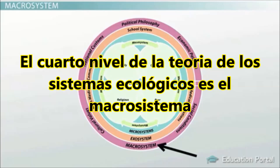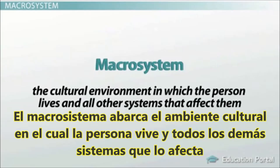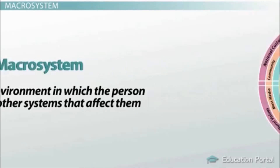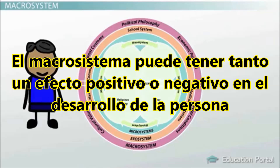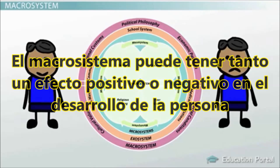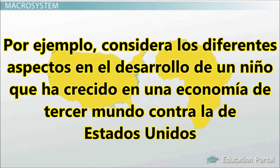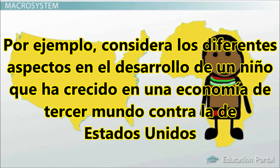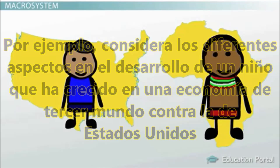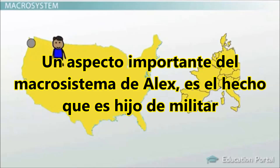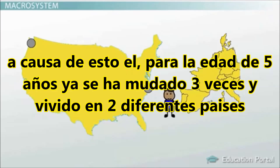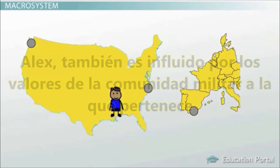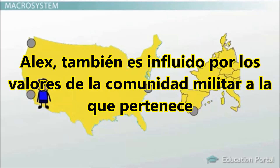The fourth level of Ecological Systems Theory is the Macrosystem. The Macrosystem encompasses the cultural environment in which the person lives and all other systems that affect them, including the economy, cultural values, and political systems. It can have either a positive or negative effect on development — consider the different effects on a child growing up in a third-world economy versus the United States. An important aspect of Alex's Macrosystem is that he is a military child, having already moved three times and lived in two different countries by age five. He is also influenced by the values of the military community he belongs to.